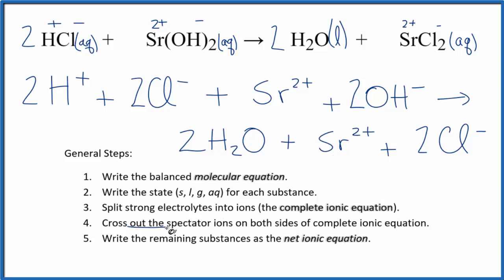Now we can cross out the spectator ions. These ions appear on both sides. Essentially, they don't change. So on the reactants here, we have two chloride ions, and in the products, we have two chloride ions. Didn't change. Cross them out. On the reactants, we also have this strontium ion here, and then again in the products, cross it out. Once we've crossed these things out that are the same on both sides, we're left with what's called the net ionic equation.